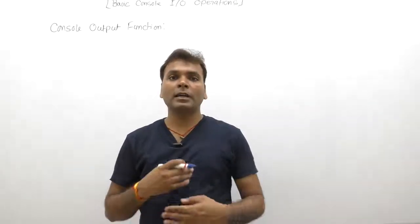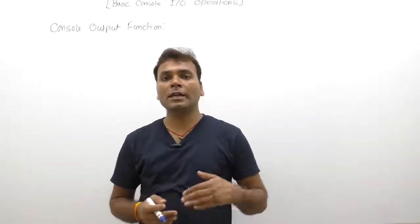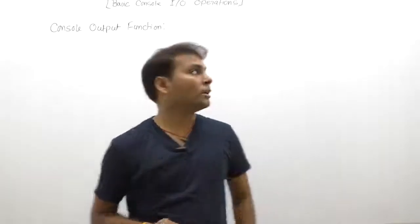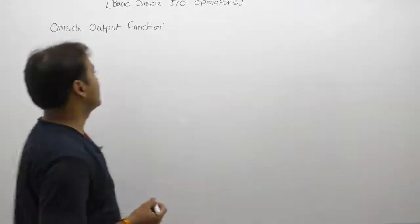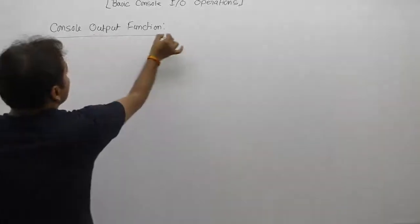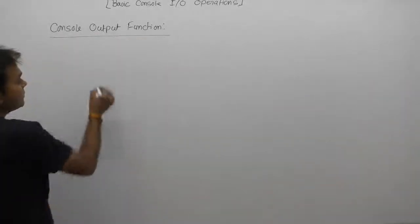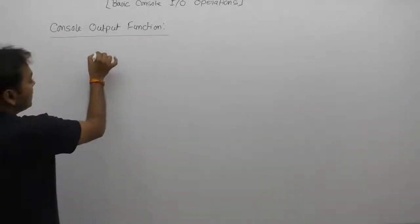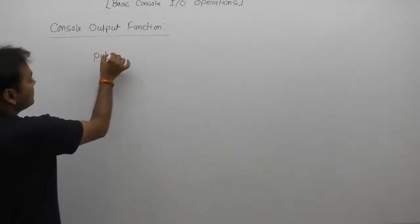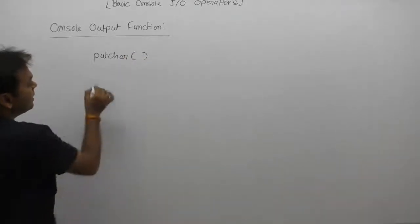All console output functions are connected with the standard output device, called the monitor, with the help of an output buffer called stdout or stderr. How many console output functions are available in C?